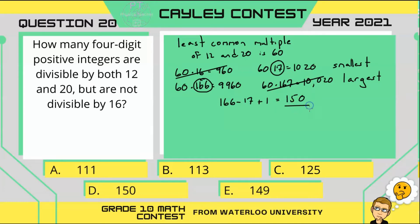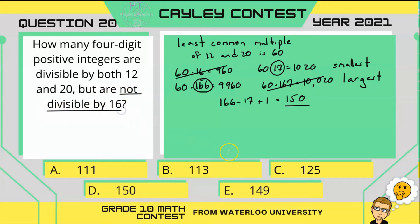So there are 150 positive four-digit integers divisible by both 12 and 20. But be careful, because that's not the answer. We still need to figure out which ones of these are also divisible by 16, so let's look for another least common multiple.